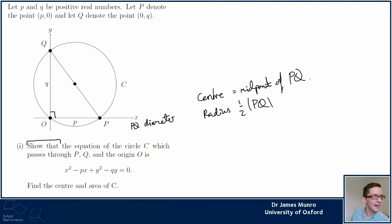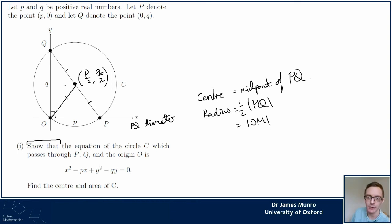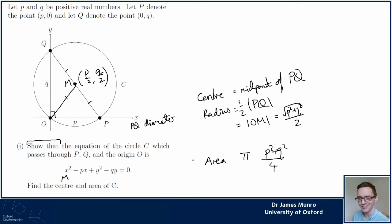Intersecting the perpendicular bisectors of the chords also works - it's a long phrase but easy to do for this setup. The center is the midpoint of PQ. The radius: I could find the length PQ, or alternatively write down the length OM where M is the midpoint, which gives √(p² + q²)/2. So the area is π r² with that radius, and the center we already found.